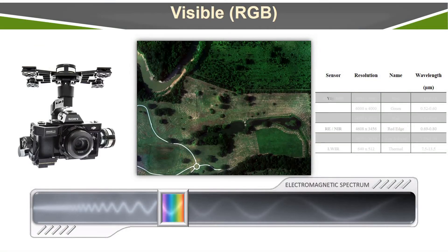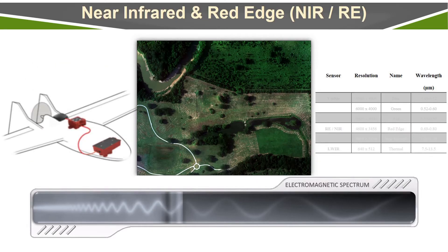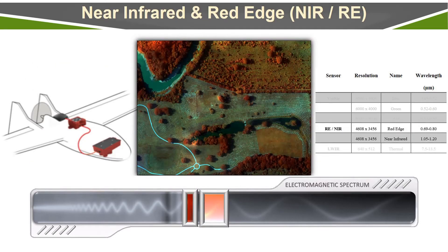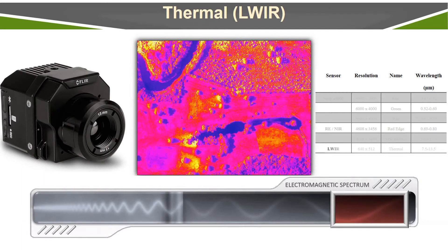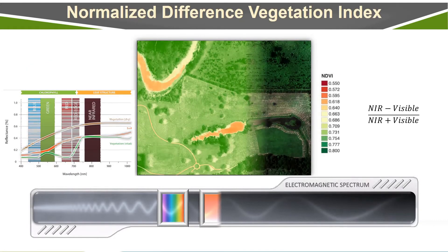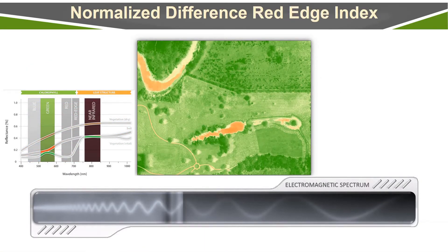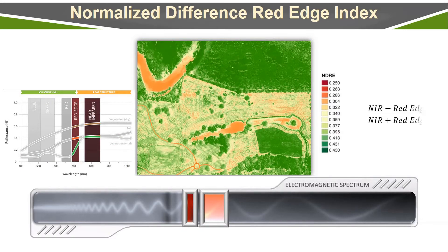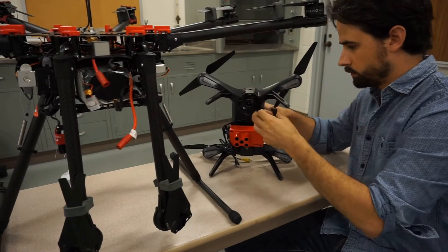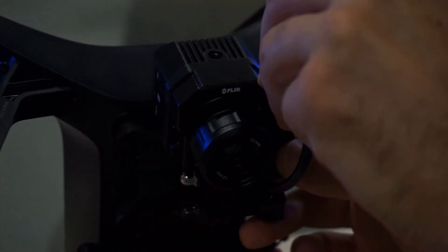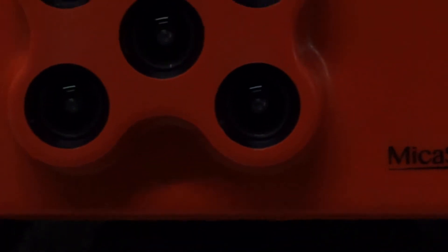These remote sensing techniques rely on the principle that objects reflect and absorb light differently depending on their physical and chemical properties. Recalling the electromagnetic spectrum, which starts with gamma rays at the shortest extreme and radio waves at the other, somewhere in the middle is visible light — what our eyes can perceive. The multi- and hyperspectral sensors on these UAVs can measure a wider range of frequencies that our eyes fail to detect, such as infrared and thermal.